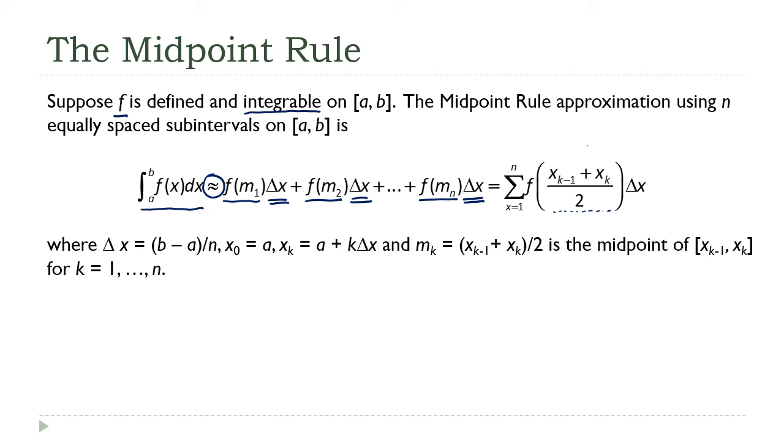Those are consecutive endpoints of an interval, and we're averaging them, finding the function values. Down here I just explain what all of these little terms mean. Δx is (b - a) divided by n. x₀—we're going to start at a. x_k is a plus k times Δx. And I talked about m_k over and over again—I've defined what they are—they're just the midpoints of their respective intervals.